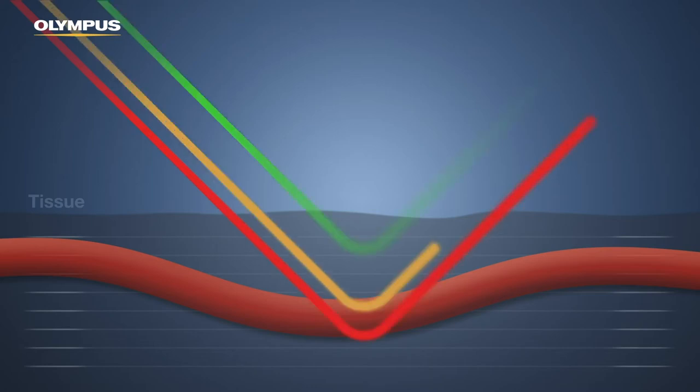If a deep blood vessel is present, the amber light is strongly absorbed. The vessel therefore appears darker and is more visible.